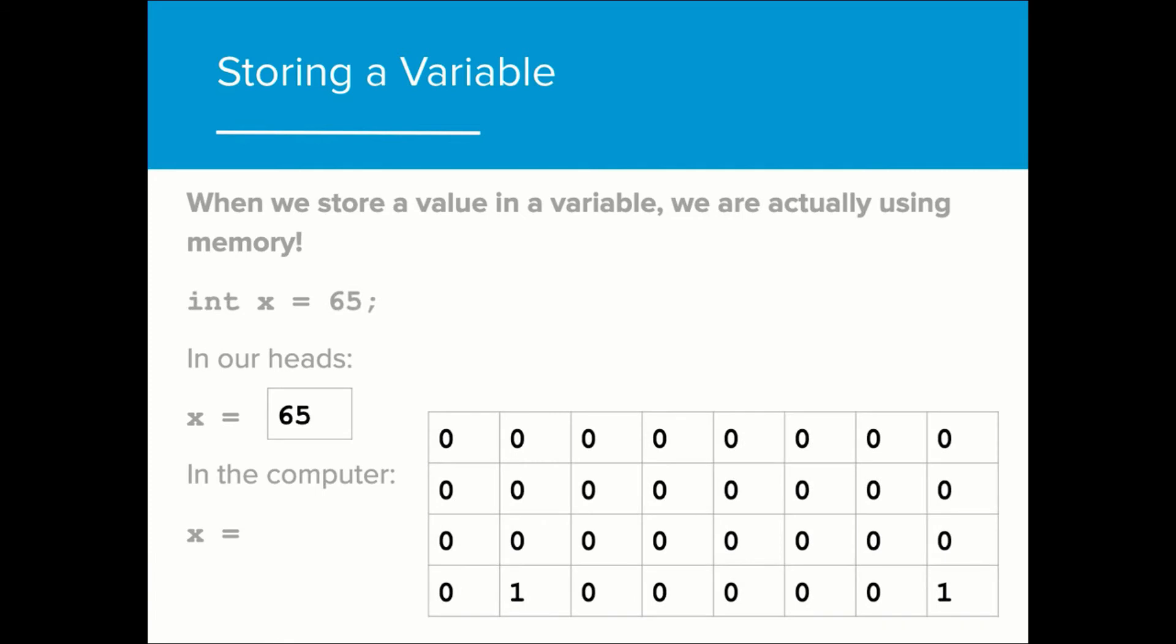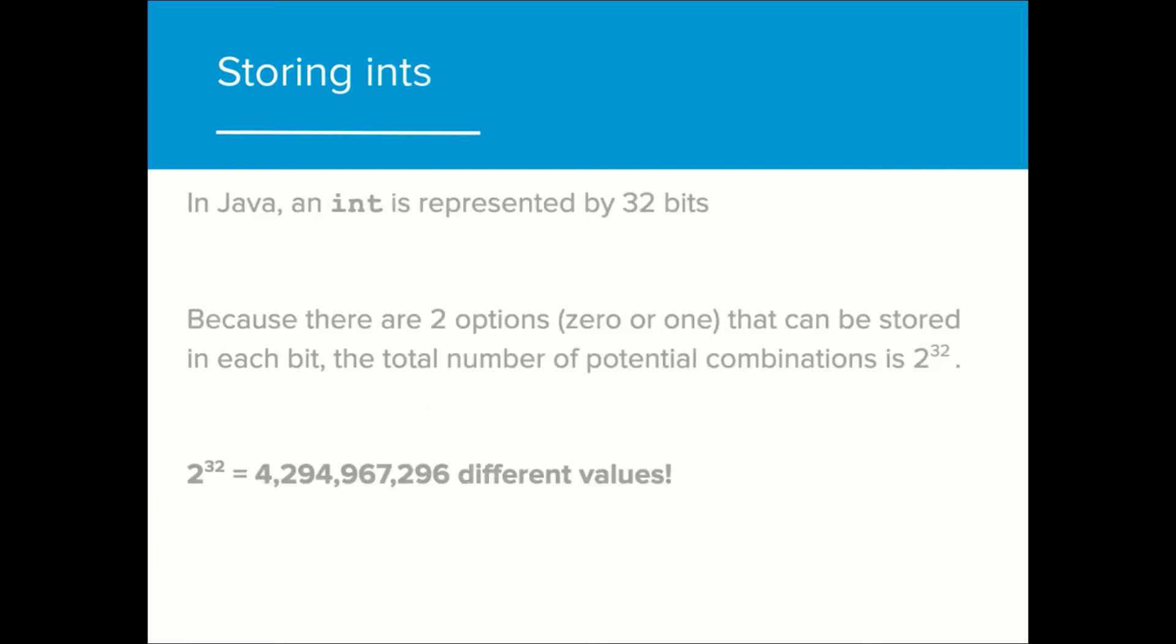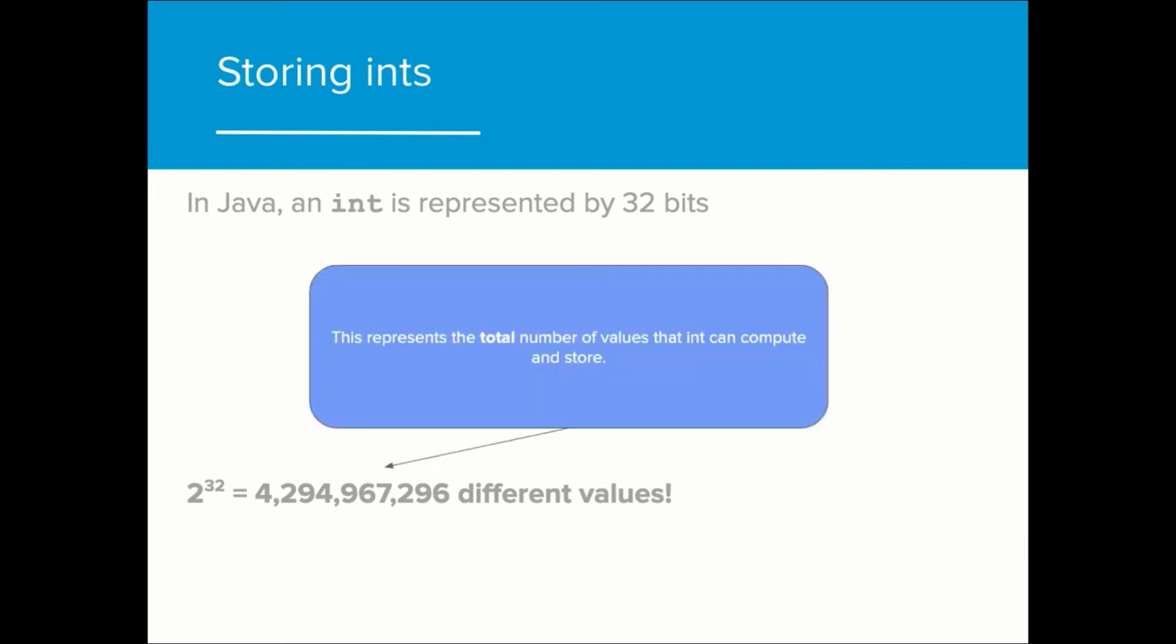While char values are represented by a series of 8 zeros and ones, int values are represented by 32. Since ints are represented by 32 bits, the total possible combination of different values that can exist is more than 4 billion. Although our number system is technically infinite, the fact that int values have a finite number of storage values means that the number system in Java is constrained.